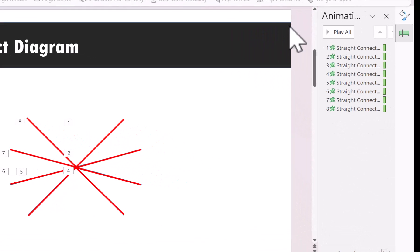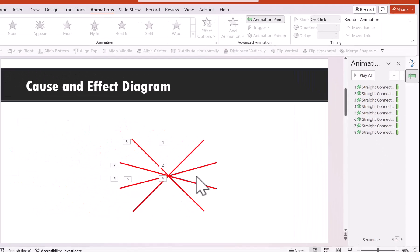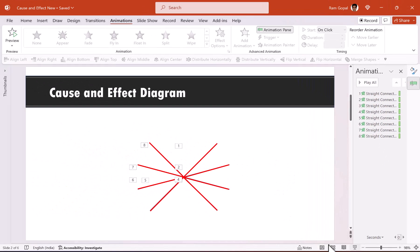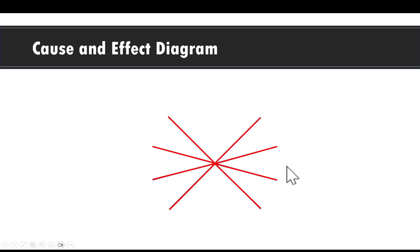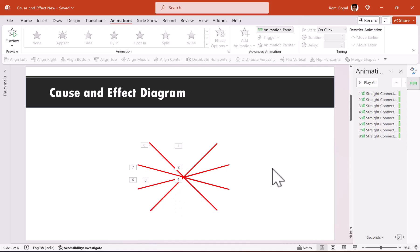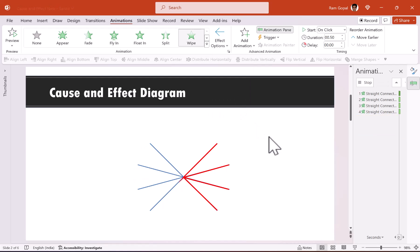In the Animation Pane you can see all the animations are in place. Going to Slide Show, the lines come in nicely, but lines 5 through 8 animate from the wrong direction. Select lines 5 to 8 and change the Effect Options to From Right to correct the direction.